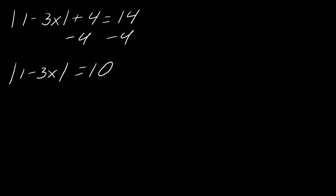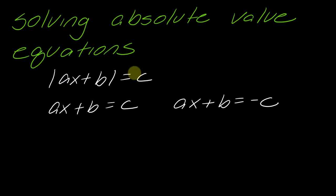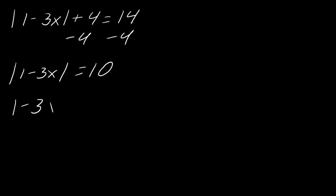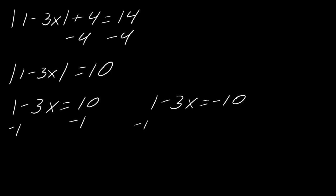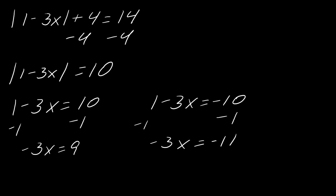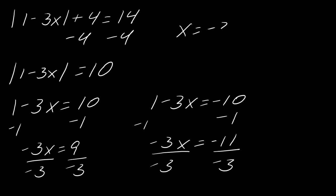This is where I break it into two separate parts, because the rule requires the absolute value to be isolated and set equal to a number. So this becomes: 1 minus 3x equals 10, and 1 minus 3x equals negative 10. Subtracting 1 from both sides: negative 3x equals 9, or negative 3x equals negative 11. Dividing both sides by negative 3, my solutions are x equals negative 3, or x equals 11 over 3.